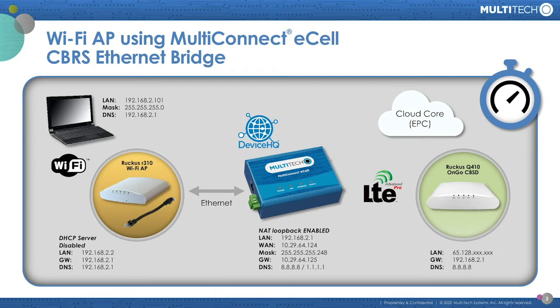The eCell looks pretty transparent to the access point — it doesn't know that it's over a wireless connection. It just thinks that it's connected on its Ethernet port. And then the eCell is connected to a CBRS small cell base station, which is connected to a core network hosted in the cloud — that's how we're then getting access to the Internet.